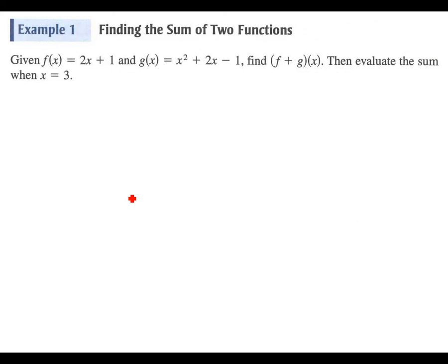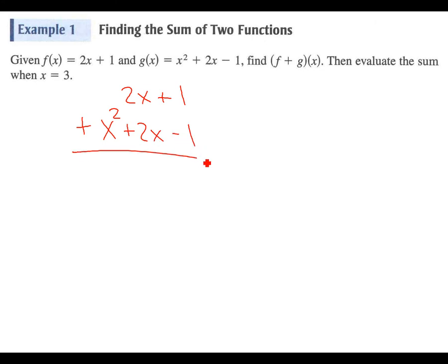Let's take a look at a couple of examples. Given f of x is 2x plus 1 and g of x is x squared plus 2x minus 1, let's add them. So we're going to say 2x plus 1 — I like to do it vertically so we can keep our like terms lined up — plus x squared plus 2x minus 1. We add them up: we get x squared, we get 4x, and the 1's cancel out.